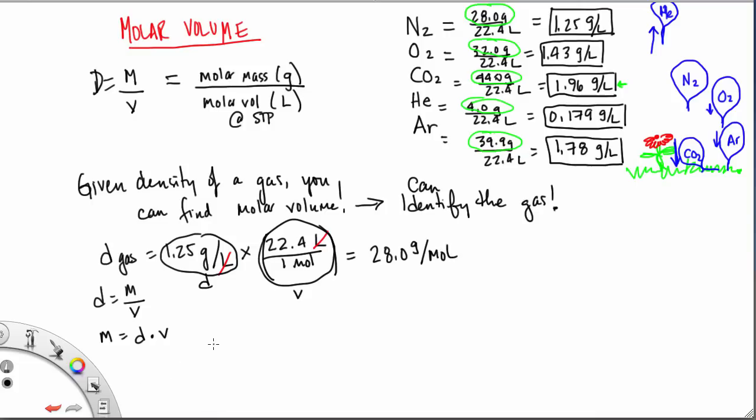I'll do another one that's similar. Let's say I have a density of 2.86 grams per liter. I want to find my molar mass. Again, I'm going to multiply by the molar volume, 22.4 liters in one mole. Liters and liters are going to cancel, so I'm left with the units of grams per mole. When I do my multiplication, I end up with 64.1 grams per mole as my molar mass.